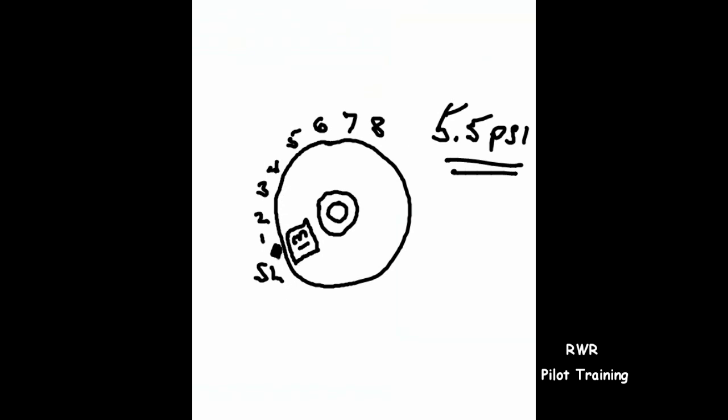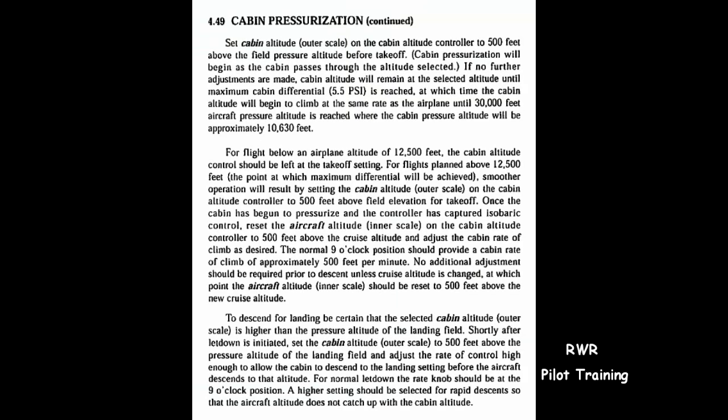A quick look at the manual shows that Piper recommends that you reset the aircraft altitude on the inner scale on the cabin controller to 500 feet above the cruise altitude and adjust the cabin rate of climb as desired. They also recommend that you can do that as soon as you begin to climb.